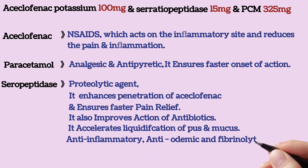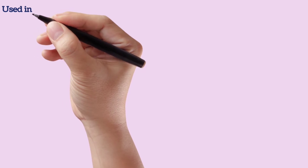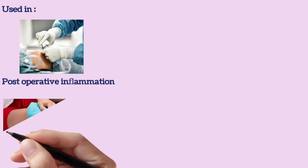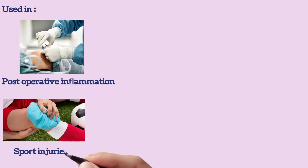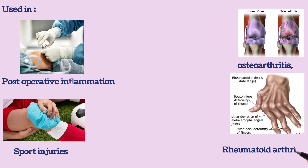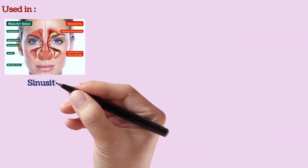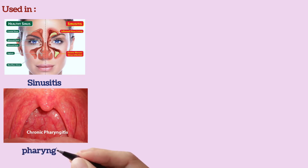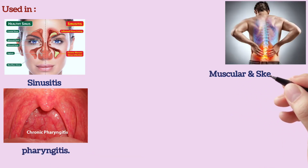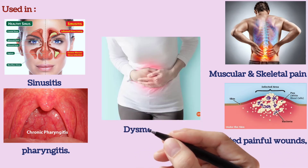Serratiopeptidase also has anti-inflammatory, anti-edemic, and fibrinolytic activity, and acts rapidly on localized inflammation. This combination is used in post-operative inflammation, sport injuries, osteoarthritis, rheumatoid arthritis, dental inflammation or pain, tonsillitis, sinusitis, pharyngitis, muscular and skeletal pain, infected painful wounds, and dysmenorrhea.